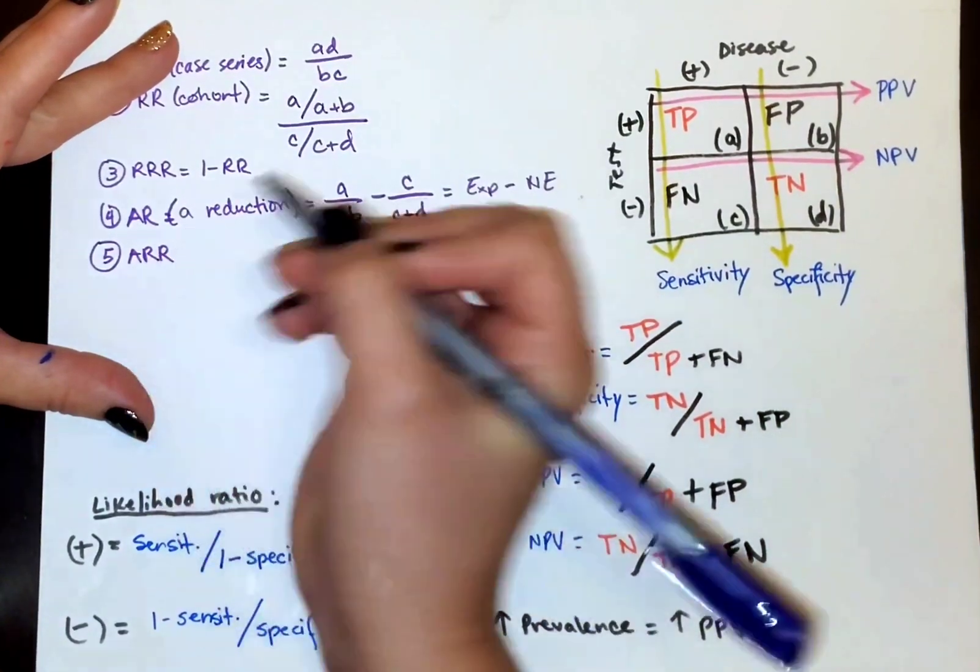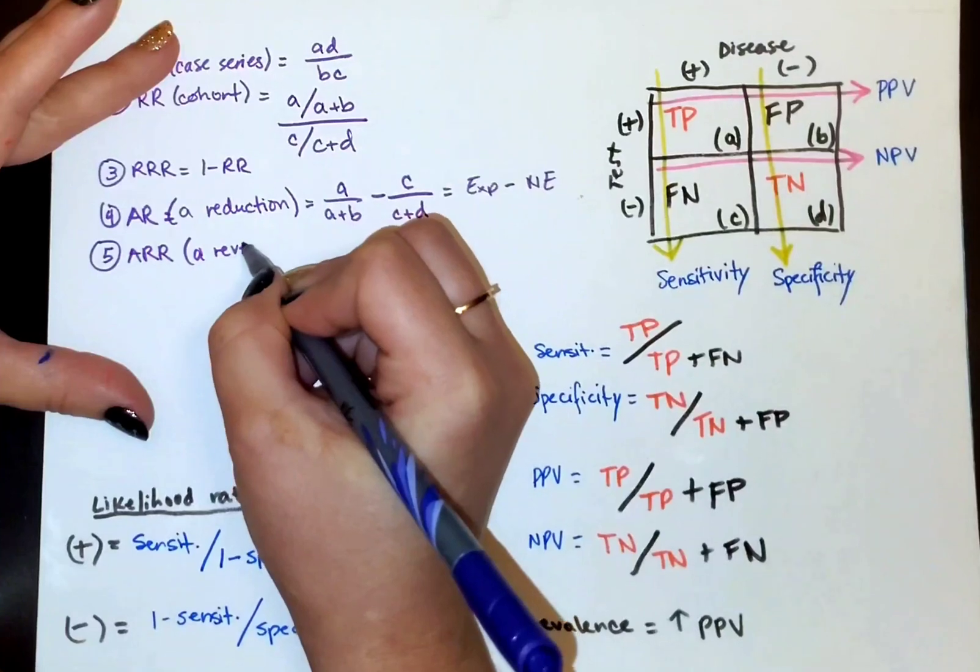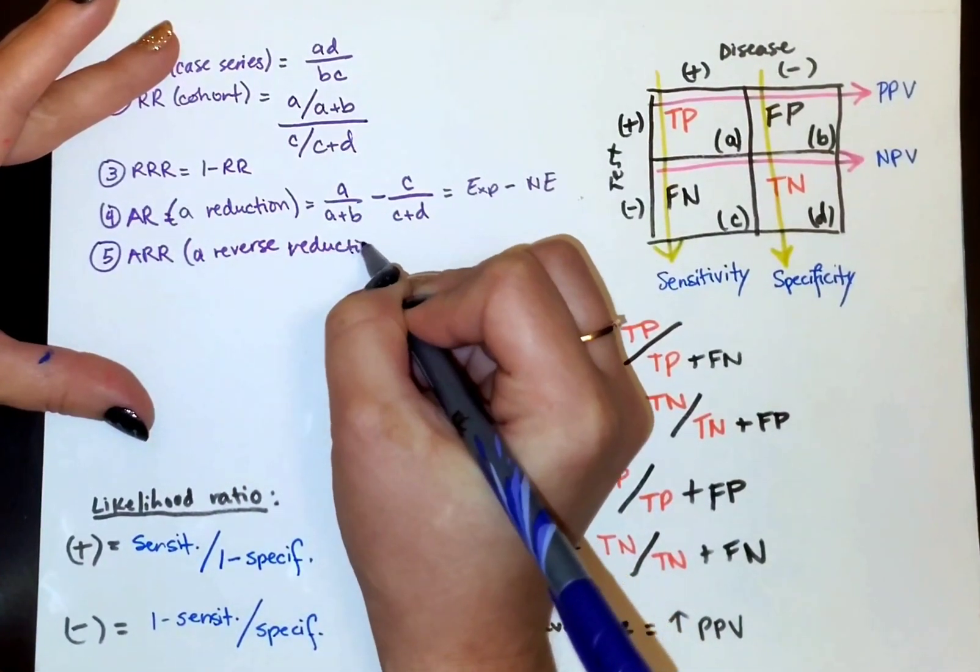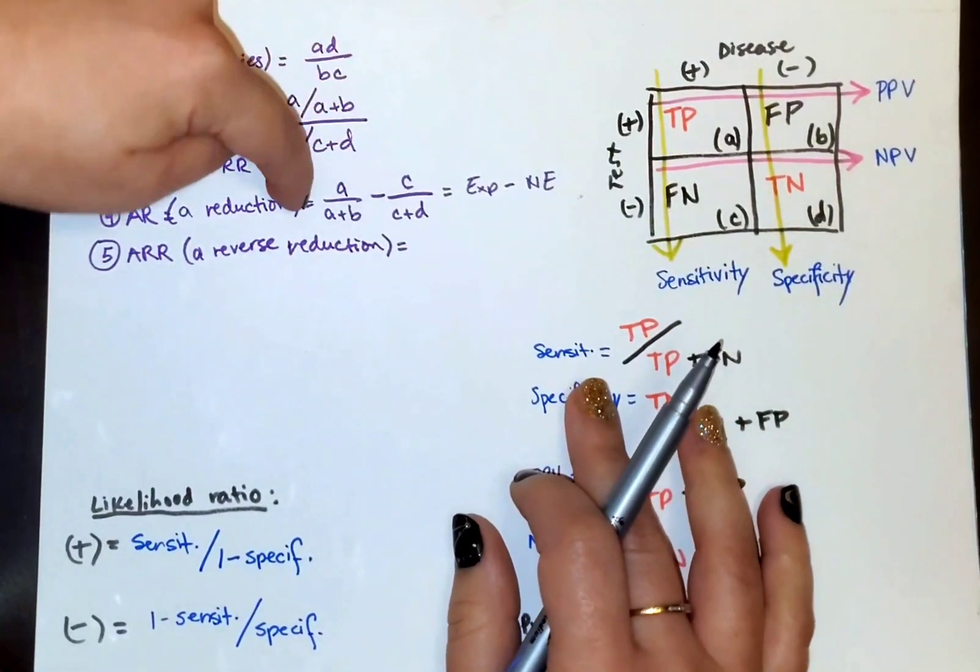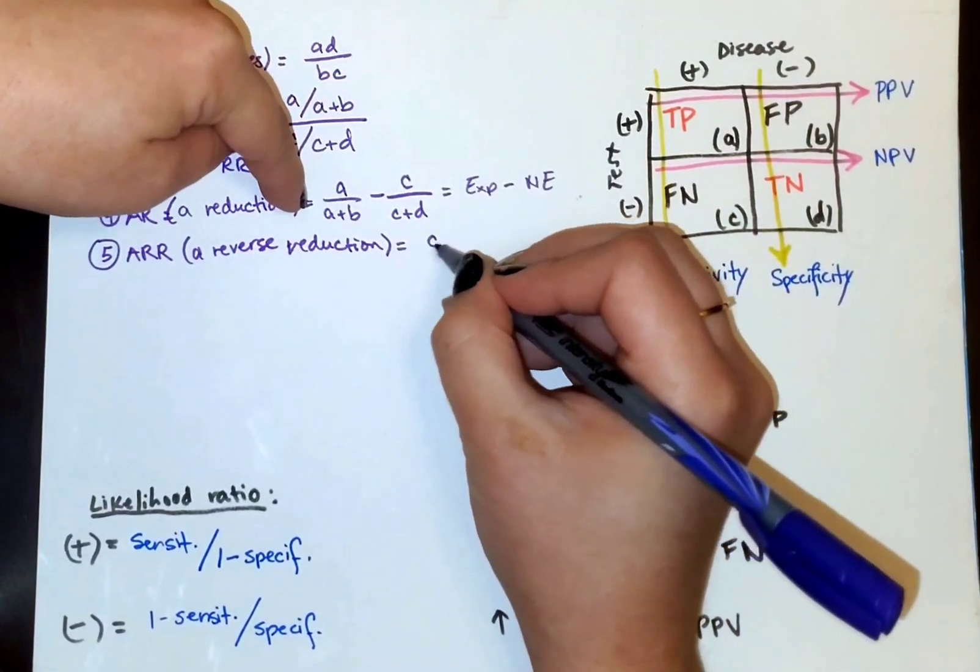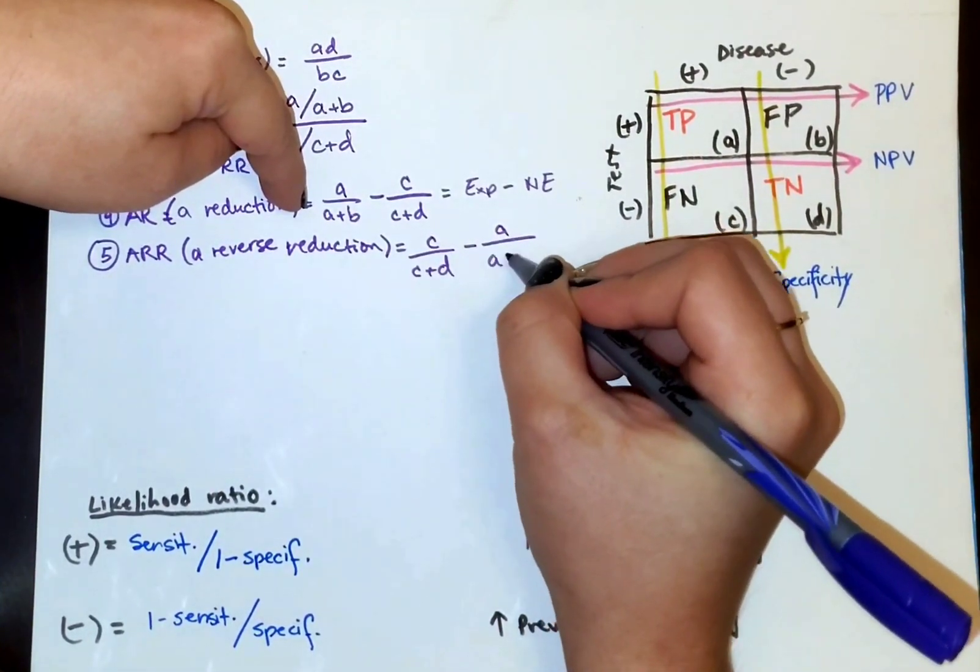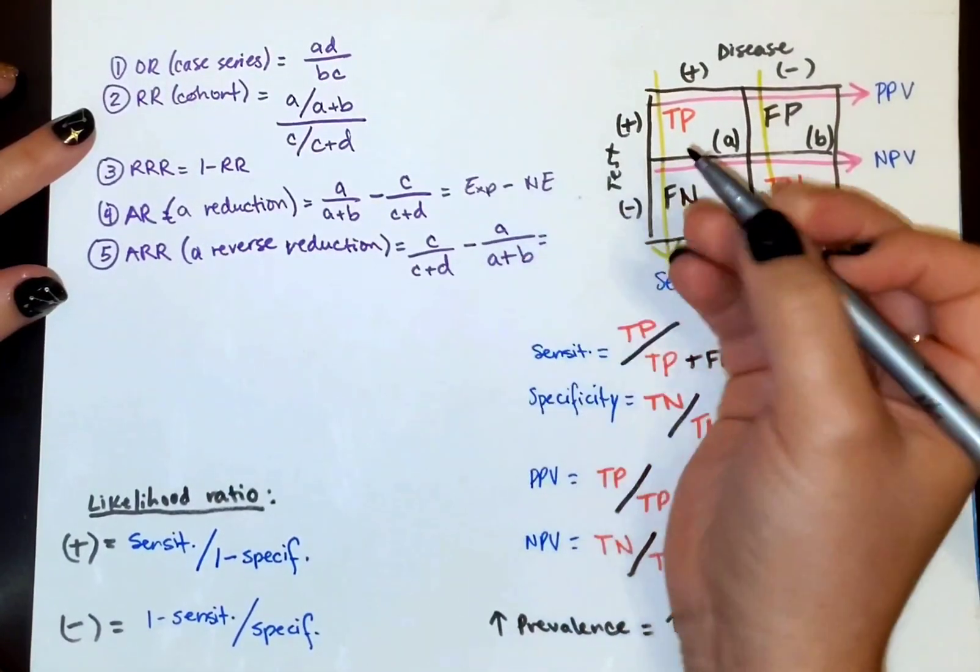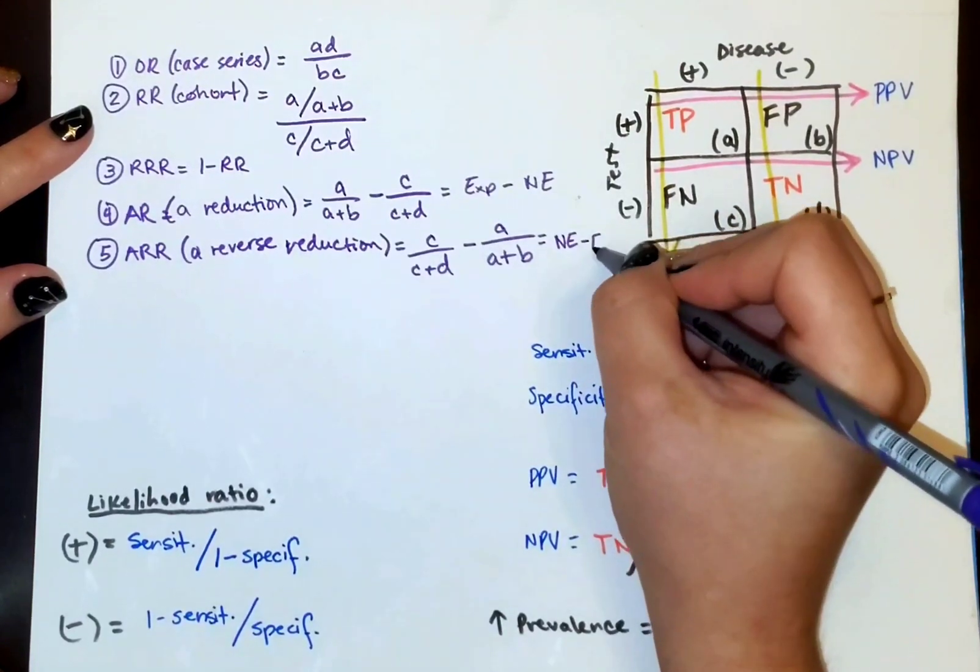Now we have absolute risk reduction. And for me, this is like a reverse reduction. And what I mean by this is exactly this, but the other way around. So we're starting with c over c plus d minus a over a plus b. And the opposite would be true. It would be like non exposed minus exposed.